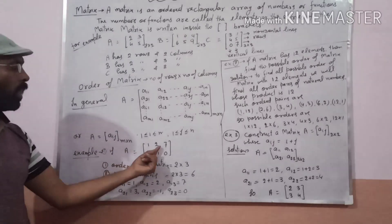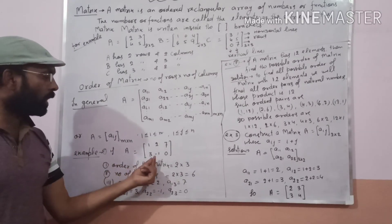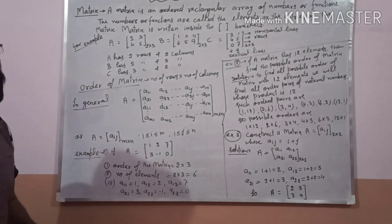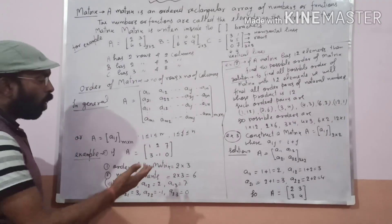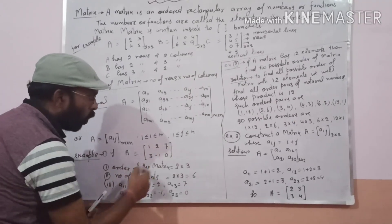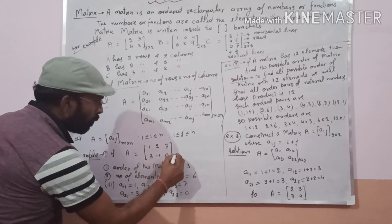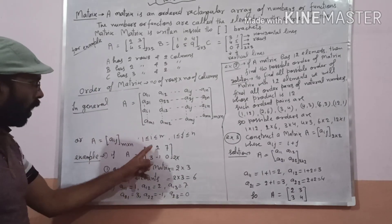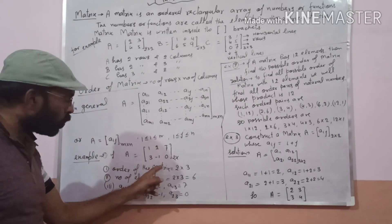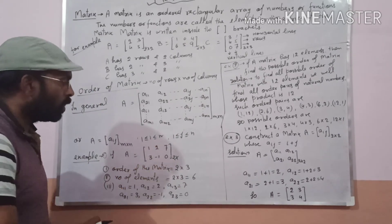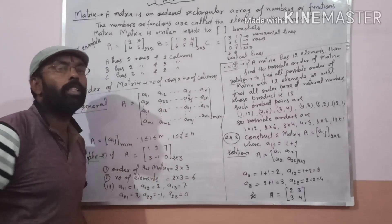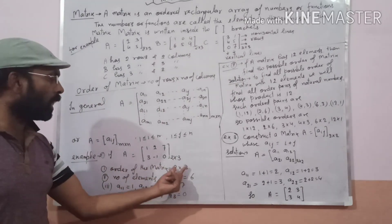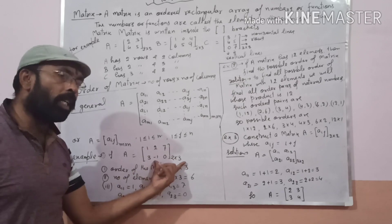For example, if A equals [1 2 7; 3 -1 0], what is the order of this matrix? It has 2 rows and 3 columns, so the order of the matrix is 2 by 3.